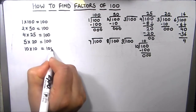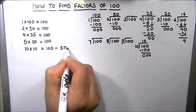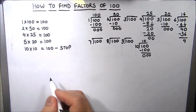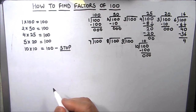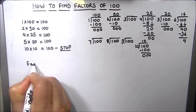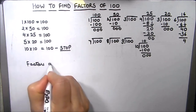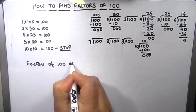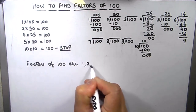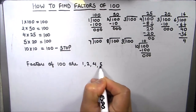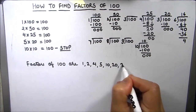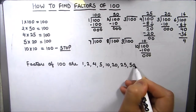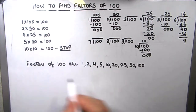As our factors are getting repeated, we are going to stop the division here, as we have found all the factors of 100. Repeated factors mean we have got all the factors. So the factors of 100 are: 1, 2, 4, 5, 10, 20, 25, 50, and 100.